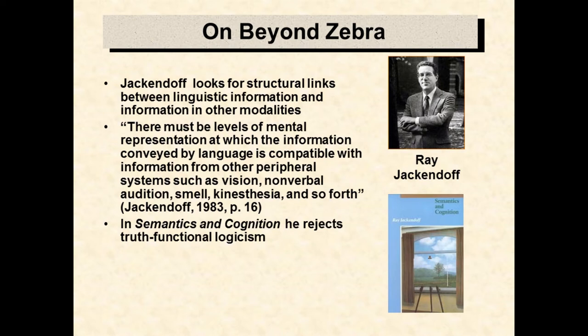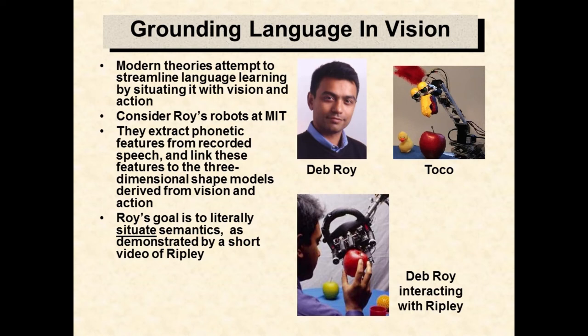A new generation of researchers takes Jackendoff's cognitive constraint very seriously. MIT's Deb Roy builds robots that learn language. His machines link phonetic features from recorded speech to information derived from their vision and their action. Their semantics requires situation and embodiment. This is evident when we see a video of one of his robots, Ripley, learning language concepts.